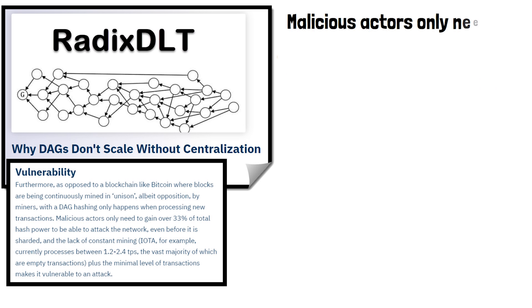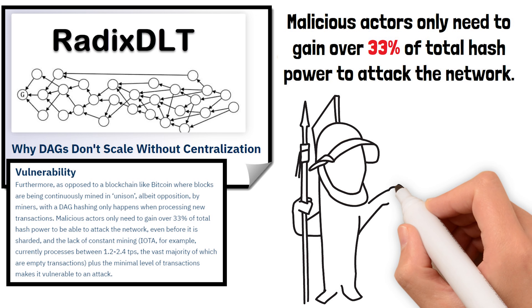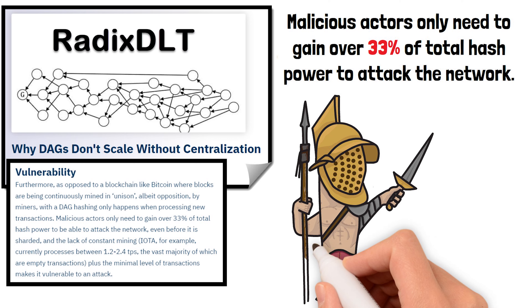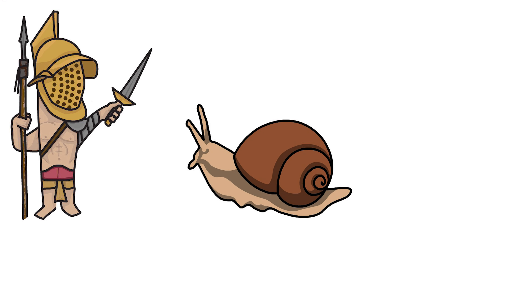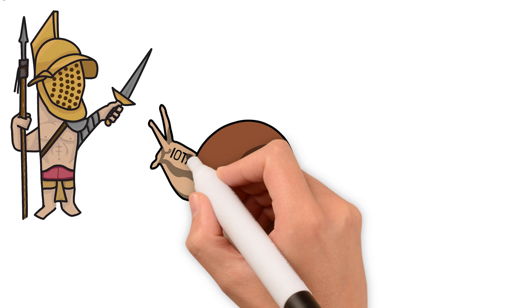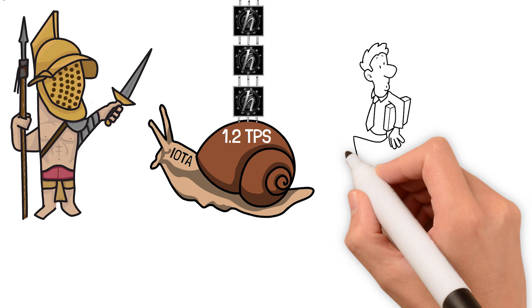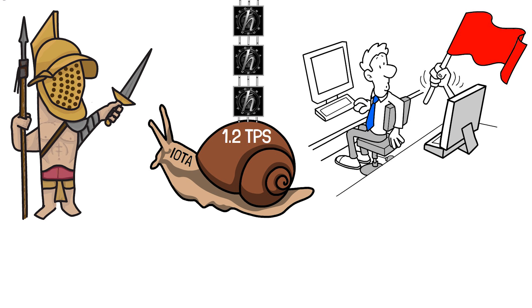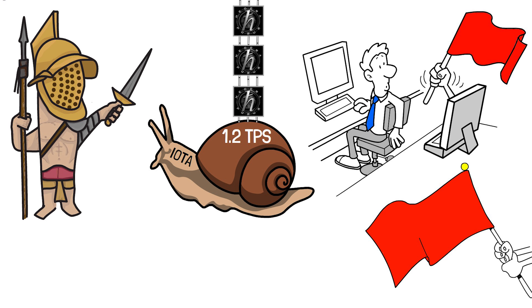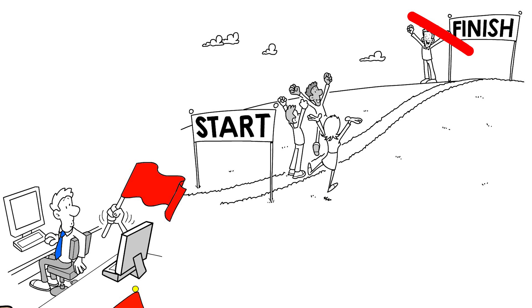Malicious actors only need to gain over 33% of the total hash power to attack the network, and that's even before it's sharded. Due to the lack of constant mining — we can use IOTA for example — IOTA is only processing between 1.2 and 2.4 TPS, and a vast majority of those are empty transactions. The minimal level of transactions makes it vulnerable to attack, which means the IOTA team is creating fake transactions because the network will be very vulnerable if there are not enough transactions taking place. So when the team fails to gain adoption, the network starts to fall apart, so they put validators in place that just send fake transactions to keep the network from being attacked.